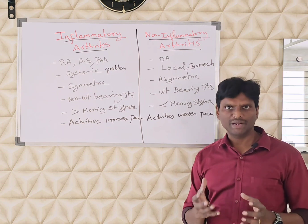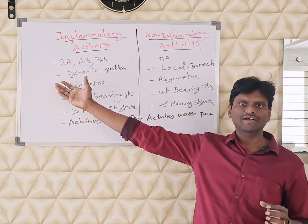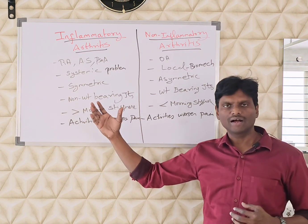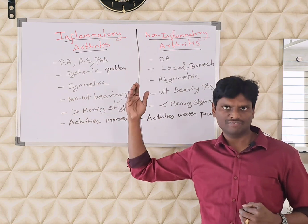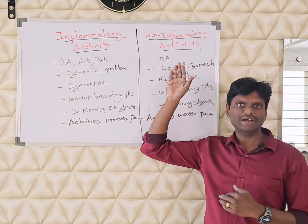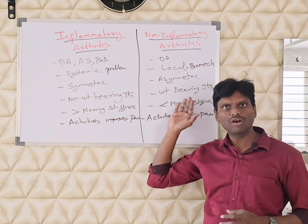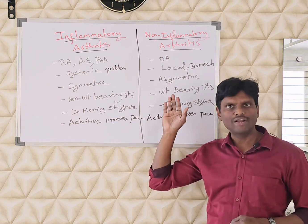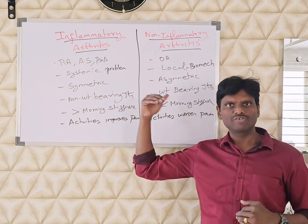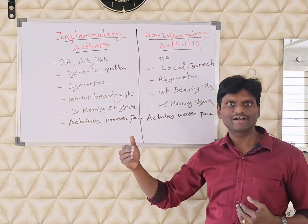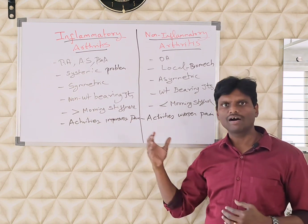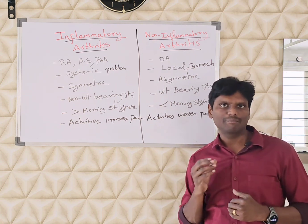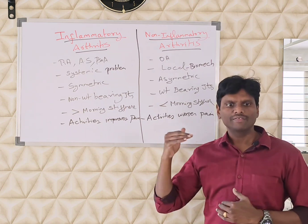Age is a primary criterion. In inflammatory arthritis, even young people get arthritis — for example, in juvenile idiopathic arthritis, children as young as five or six years old can be affected. In the mechanical arthritis category, only older people tend to get it, because joint wear and tear occurs more during old age. So if a young person presents with joint pain, think of inflammatory arthritis; if a 60-year-old presents with hip pain, it's more likely mechanical arthritis.